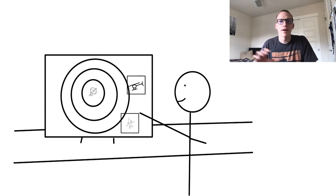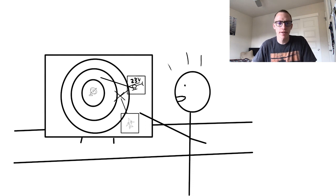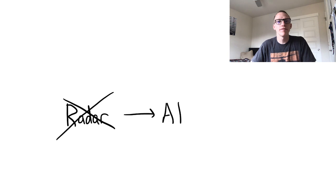Imagine ATC sees this helicopter and airplane on a collision course. They could order Helicopter 23 Victor, turn right 30 degrees, and avoid the accident. ADS-B provides the same benefits and more.